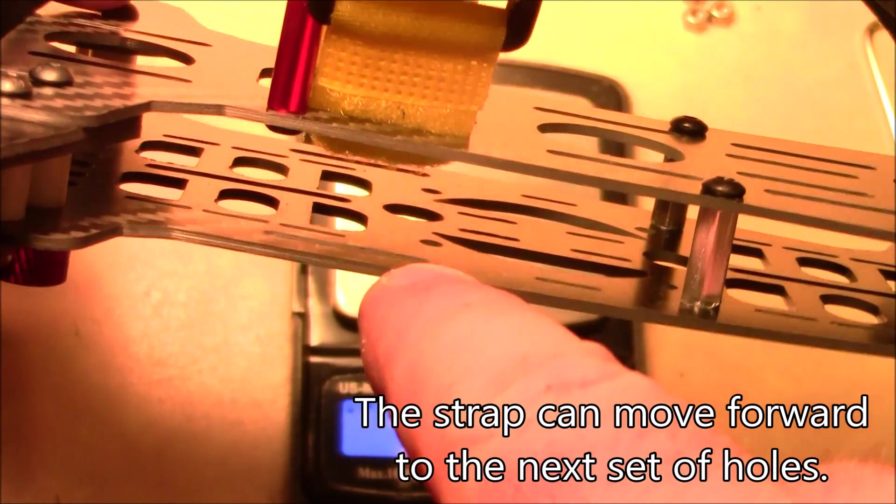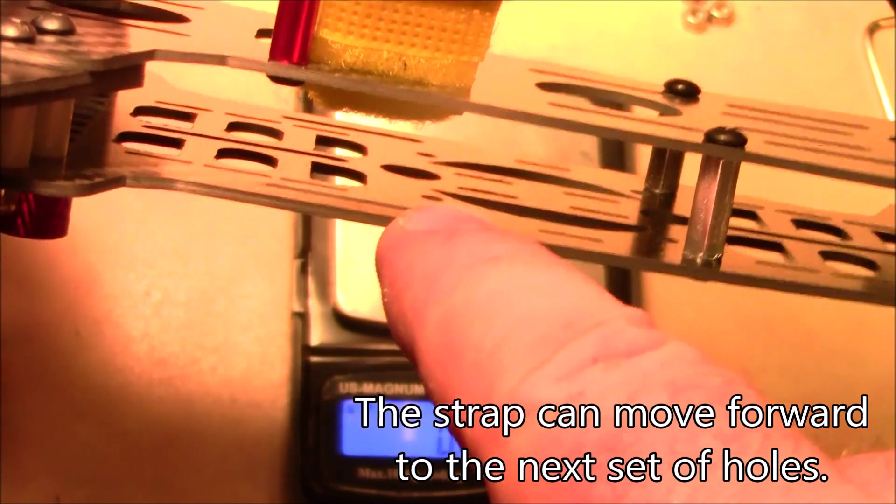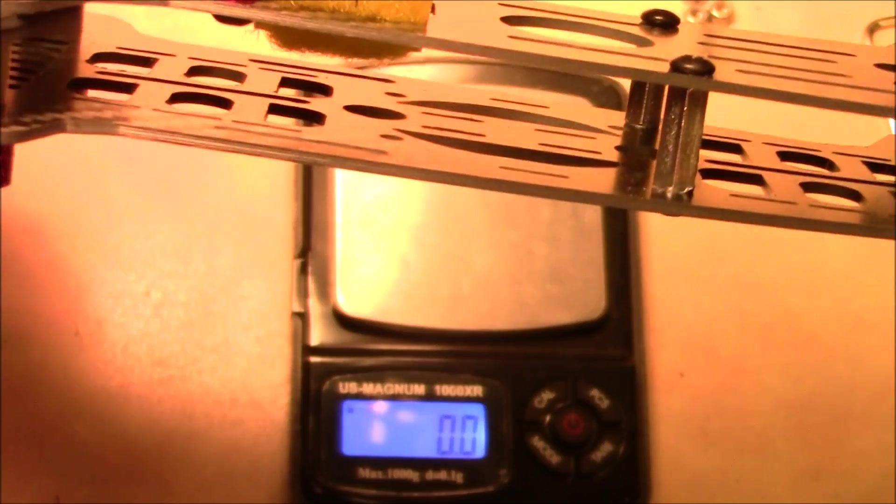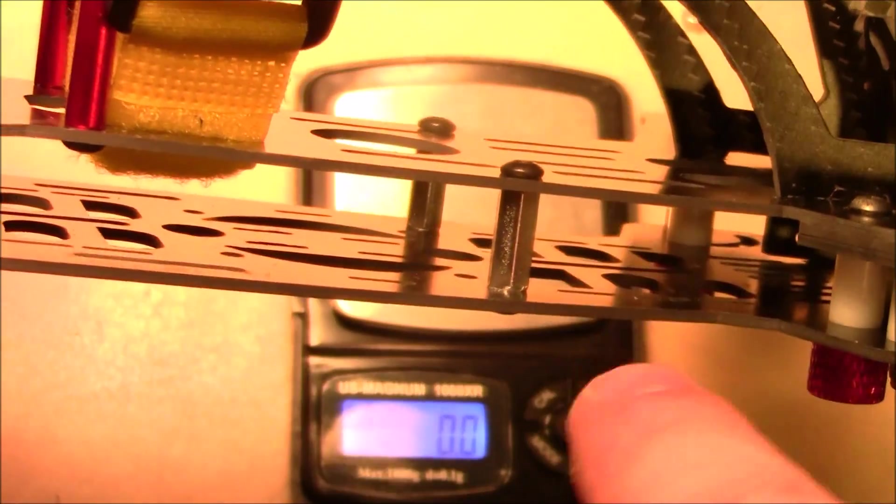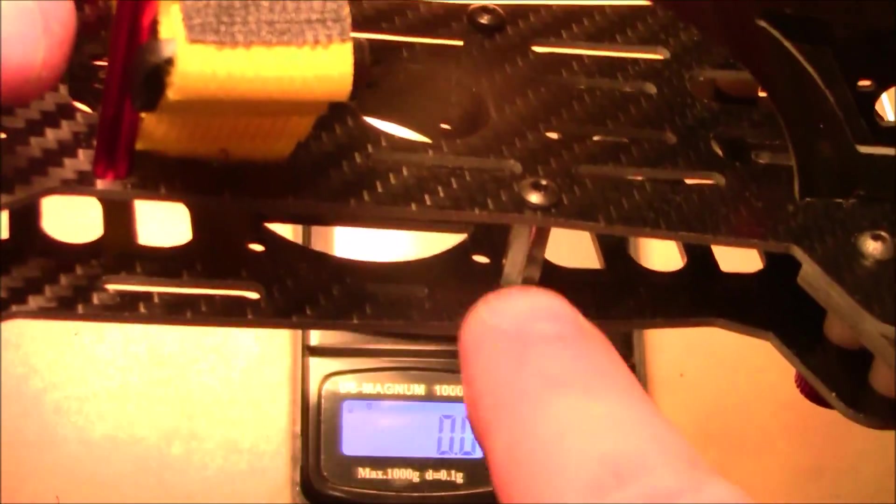You would want to put some kind of washers underneath the board so the board's not actually touching the carbon fiber because it would be conductive. Also the pins on the Naze32 for the motor signal wires point out the front.